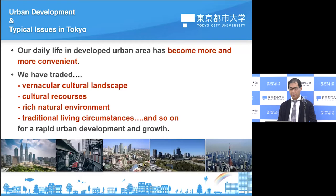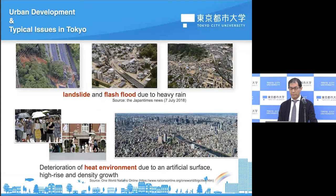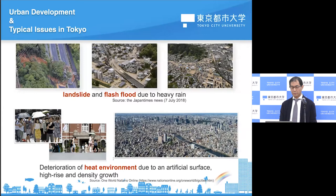Our daily life in developed urban areas has become more and more convenient nowadays. But we have traded the vernacular cultural landscape, cultural resources, rich natural environment, and traditional living circumstances for rapid urban development and growth. I'm going to explain about the urban environmental issues. Sometimes landslides and flash flooding due to heavy rain happen, not only in natural areas but also in urban areas.